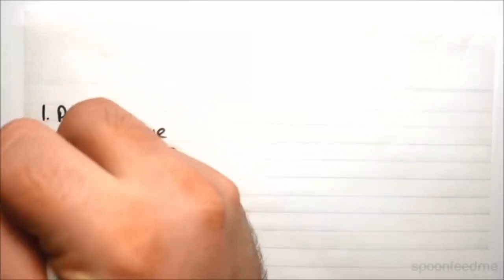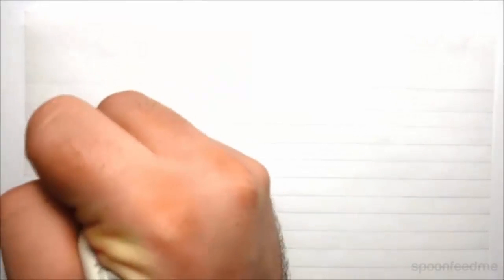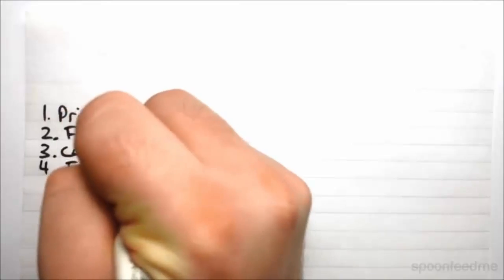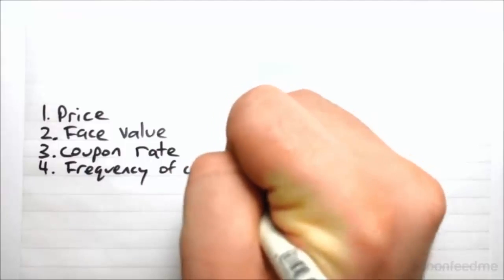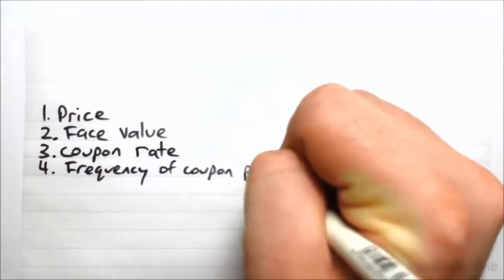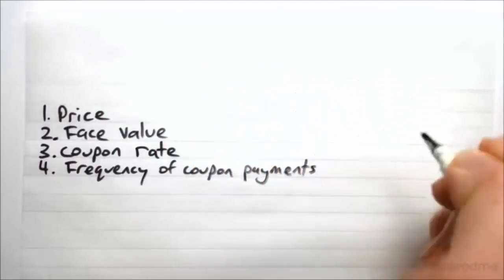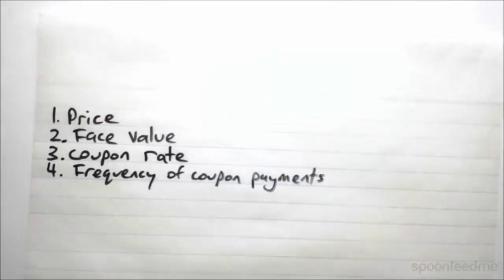Now another thing here is the frequency of coupon payments. So how often you receive your coupon payments could be once a year or it could be once every six months. Typically in Australia for Australian government bonds it is once every six months.